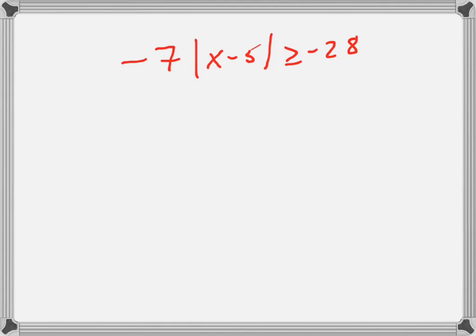I've solved this absolute value inequality. The first thing I have to do is get rid of the negative 7 by dividing both sides by negative 7.